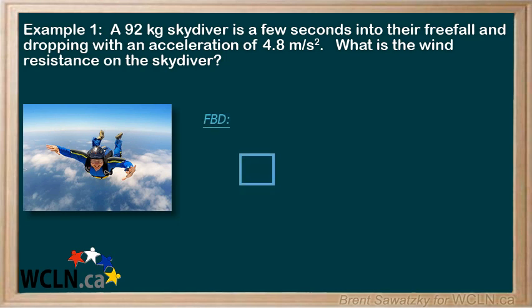First step, a good free body diagram. Now we can show our force of gravity going down, the friction force from the wind resistance is pushing up, and that's all of the forces. Now, the skydiver is clearly accelerating down, so we could set our positive direction as down. Again, make sure our indicator is a dotted line, so we don't get it confused with the forces.